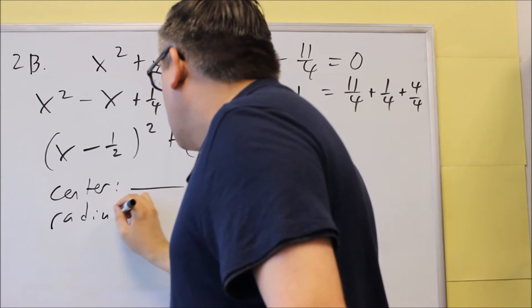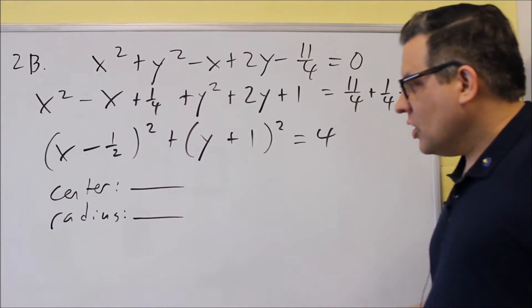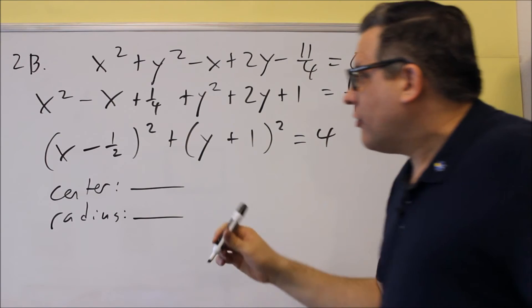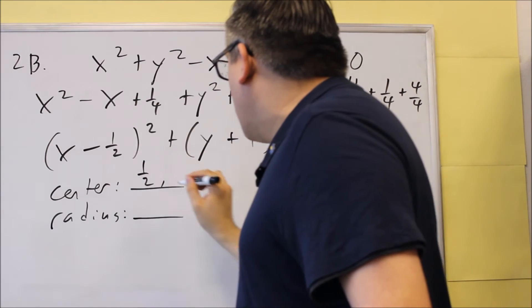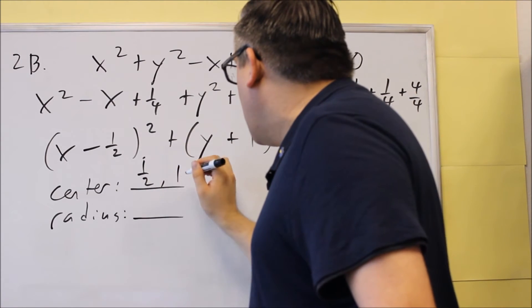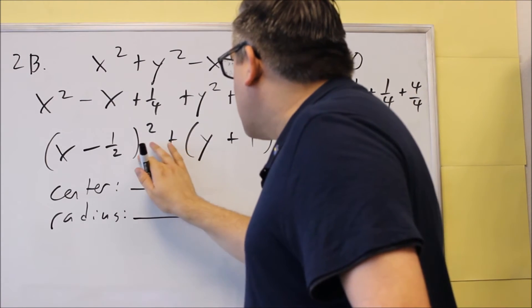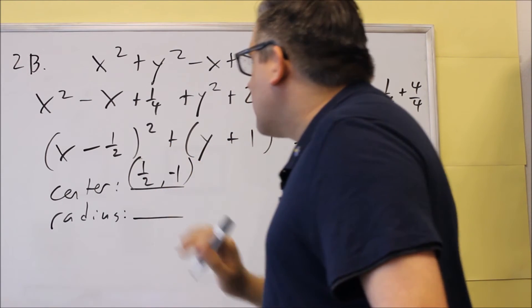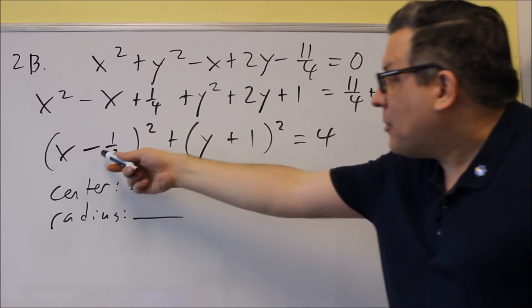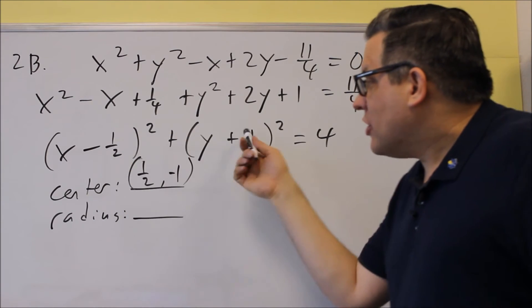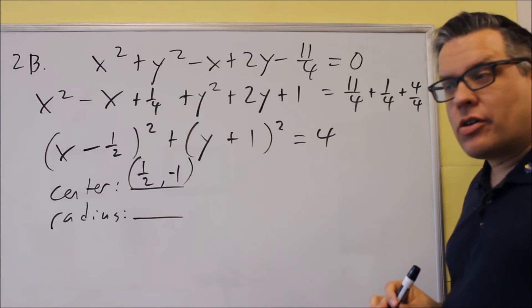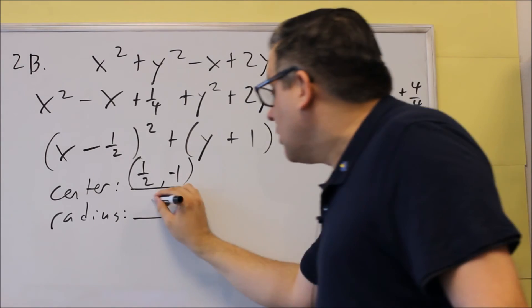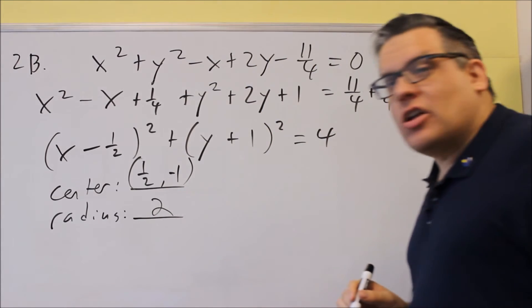For the center, it's the opposite sign of each of these values. Opposite sign of negative 1 half is positive 1 half. Opposite sign of positive 1 is negative 1. So the center is (1/2, negative 1). The radius is always the square root of the number after the equal sign — the square root of 4 is 2.